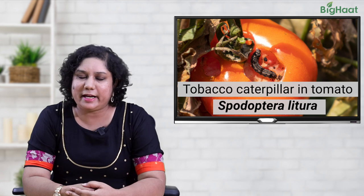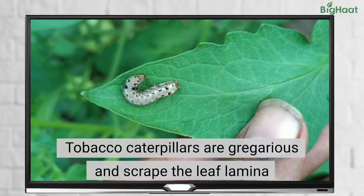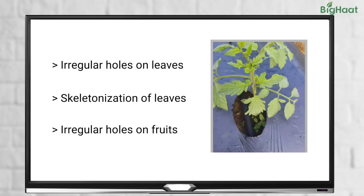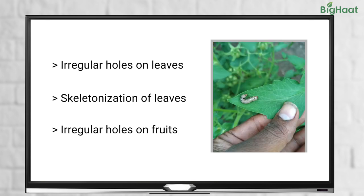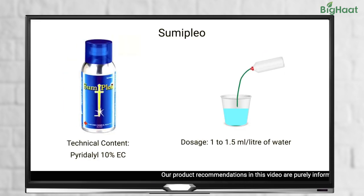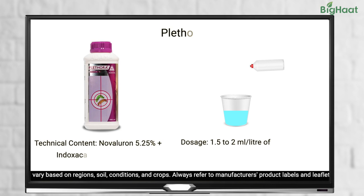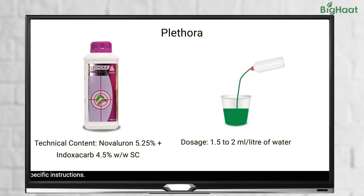Next, we have tobacco caterpillars in tomato that feed on the economical part, or the fruit, of the plant. In the early stages, these caterpillars are gregarious and scrape the chlorophyll content of the leaf lamina, creating a papery white appearance. Further, irregular patches appear resulting in the slow skeletonization of the leaves, leaving only veins and petioles. Later, the caterpillars become voracious feeders making irregular holes on the leaves and fruits. To get rid of tobacco caterpillars in tomato, use 1 to 1.5 ml of Sumiplio or 1.5 to 2 ml of Plethora mixed in 1 litre of water.